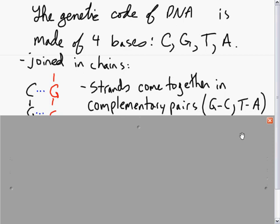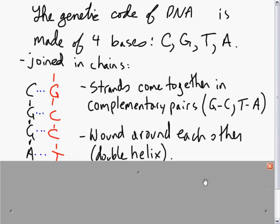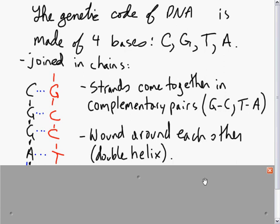And the strands come together in complementary pairs. Now, they're not identical pairs. It's not T to T or A to A, but they're always the same. G always goes with C, C always goes with G. Same with T going to A and A going to T. So they're complementary. They're wound around each other so that they make a double helix. It's a regular ladder, just twisted.